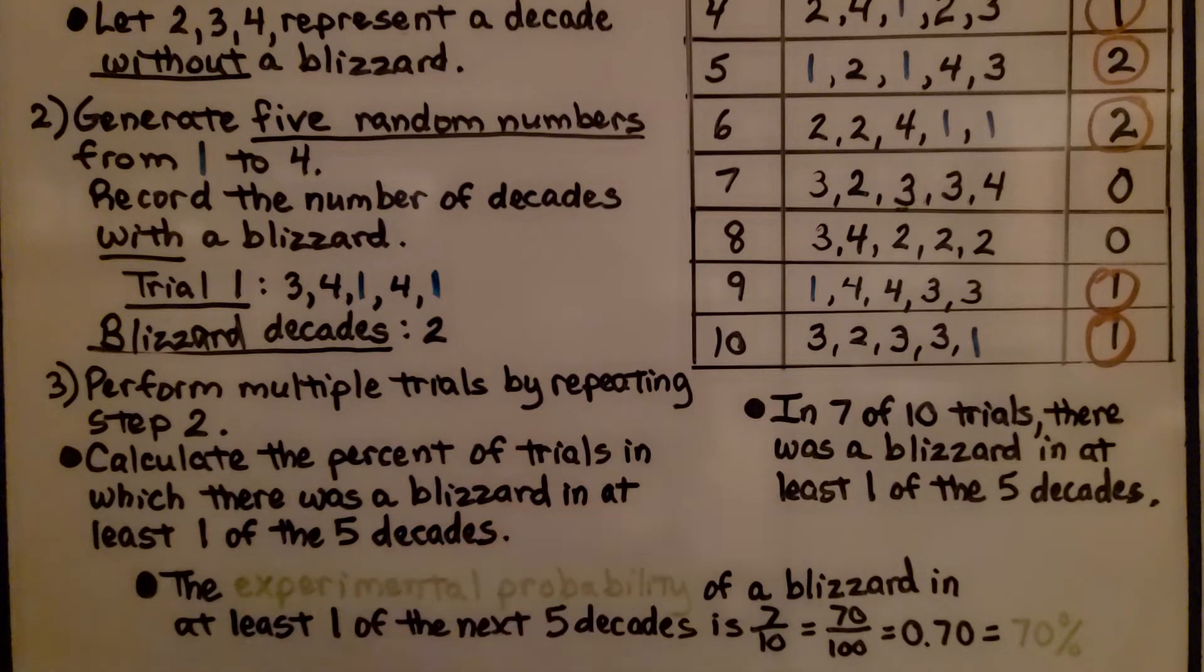The experimental probability of a blizzard in at least one of the next five decades is seven tenths, seven out of ten, which is equal to 70 hundredths, which is 0.70 as a decimal, or 70%.